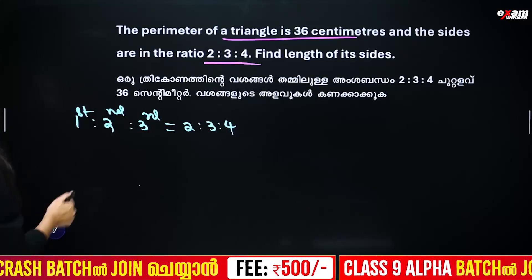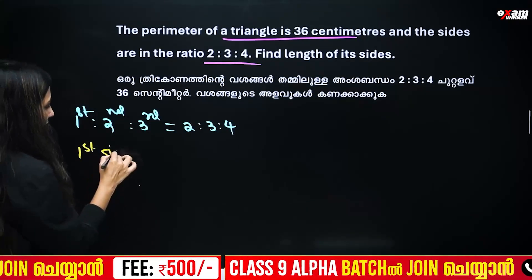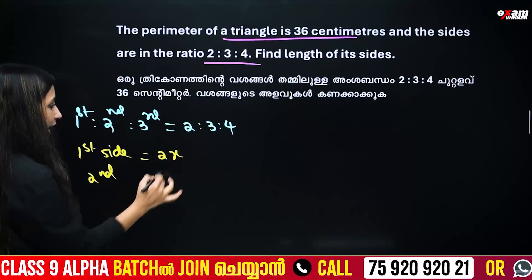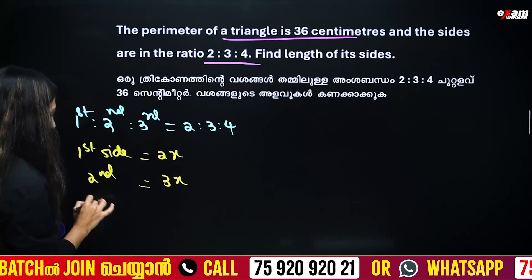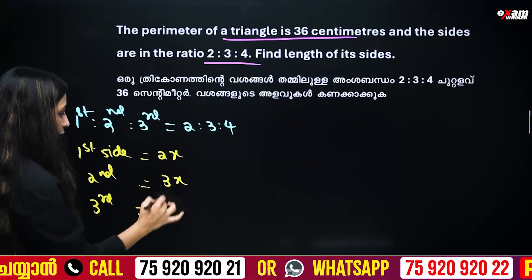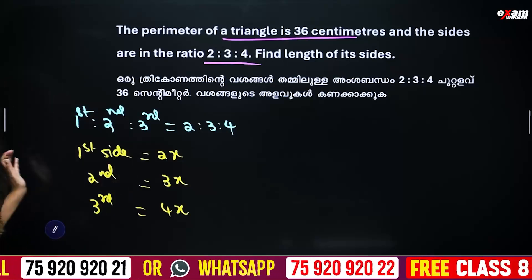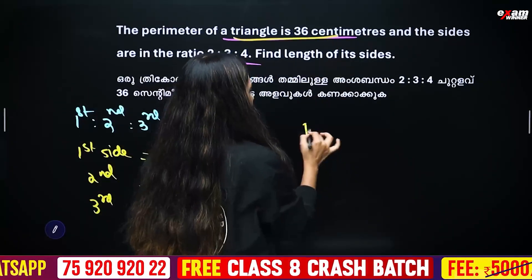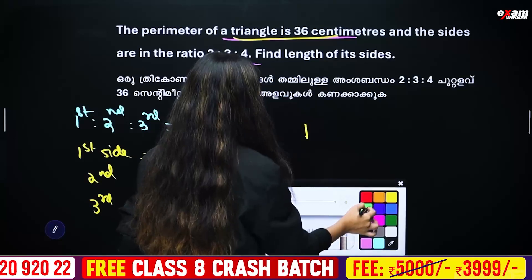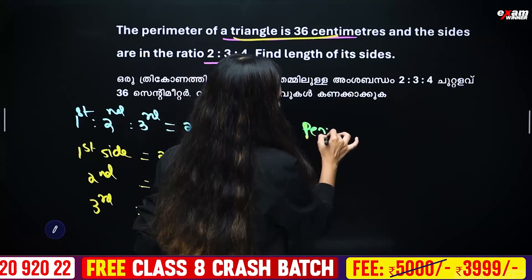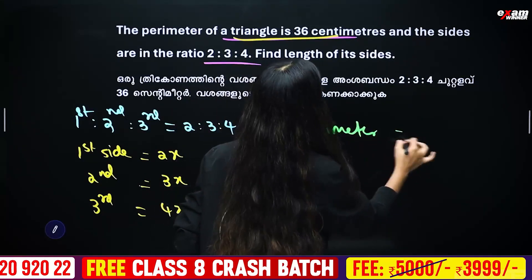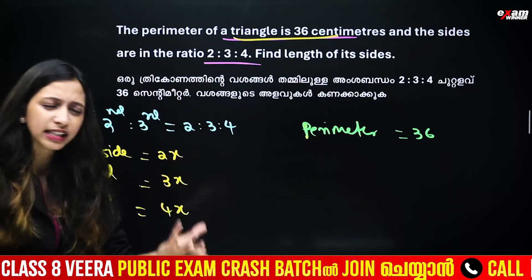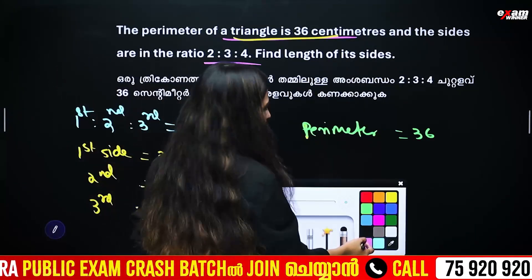The sides are in ratio 2 is to 3 is to 4. Let the first side be 2x, the second side be 3x, and the third side be 4x. The perimeter is already given as 36 cm. The perimeter equals the sum of all three sides: first side plus second side plus third side.